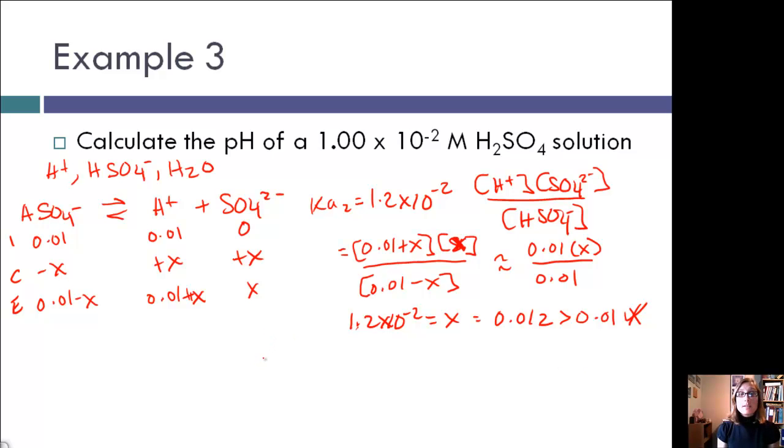So, negative b plus or minus the square root of b squared minus 4ac over 2a. Now, I'm not going to go through all the algebra because I know you guys can do that. But if you take our initial equation here, this equals 1.2 times 10 to the negative 2, multiply all of your x's through, get your equation into the form of x squared plus 2.2 times 10 to the negative 2x minus 1.2 times 10 to the negative 4 equals 0.